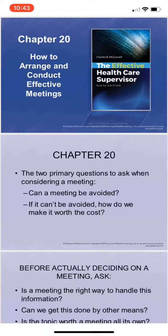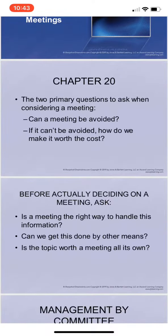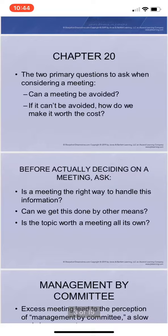Before putting a meeting on the schedule, determine whether simple questions might allow you to avoid it. Is the intended flow of information strictly one way, with people to be informed but no immediate feedback necessary? If so, consider other means such as a letter, memo, voicemail, email, or bulletin board. Is there a single clearly defined topic with a limited number of people involved? Perhaps you can contact three or four people individually. Is the topic worth a meeting of its own, or can it wait to be bundled with other matters at a regularly recurring meeting?